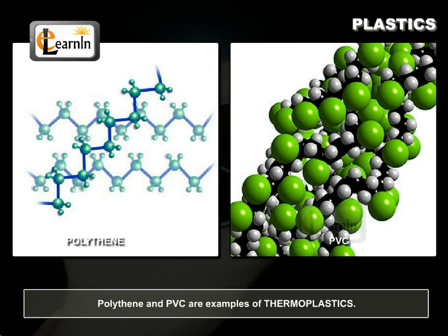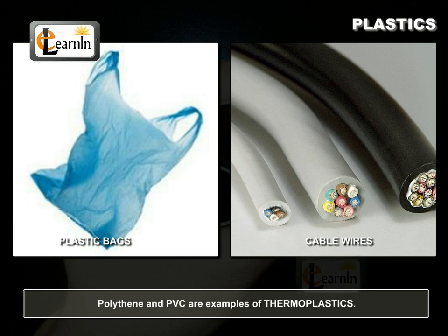Polythene and PVC are examples of thermoplastics. They are used in the manufacture of plastic bags and cable wires.